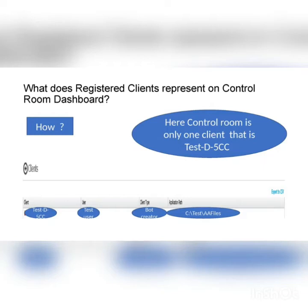As you can see here, in my control room only one client is registered — showing the client ID, description, where the client is running, and the application path. My client is a bot creator, not a bot executor. I am creating and registering only one client, which is a bot creator, and that is the reason it is showing registered clients as only one.